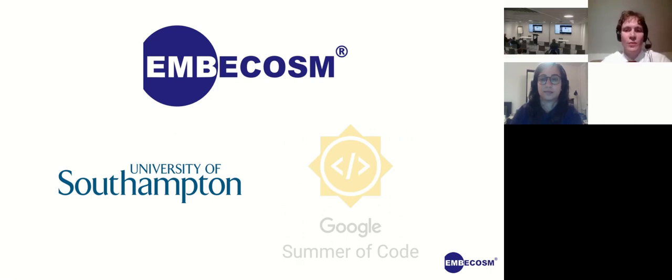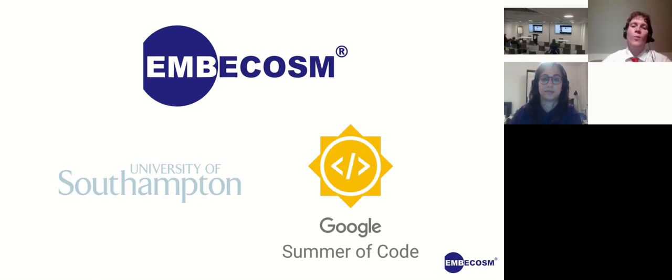This project was a collaboration between EMBOCOSM and the University of Southampton in the first instance. That went so amazingly well that we decided to continue the project with the Google Summer of Code this year. The work done with Southampton was we supervised six of their very bright master's students. We set them the goal of accelerating AI broadly with a RISC-V core and as we will see later, they did a very good job of it.